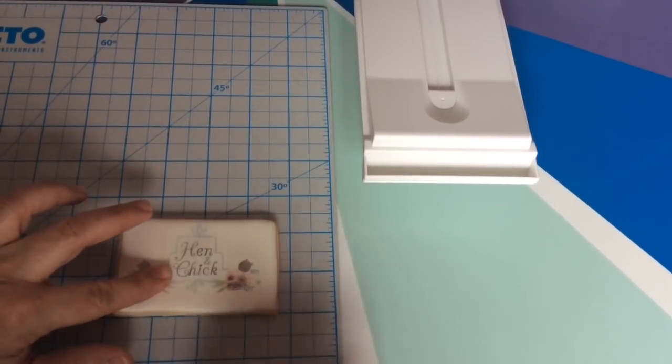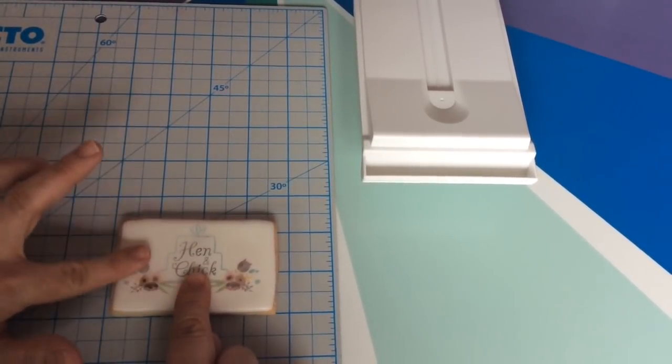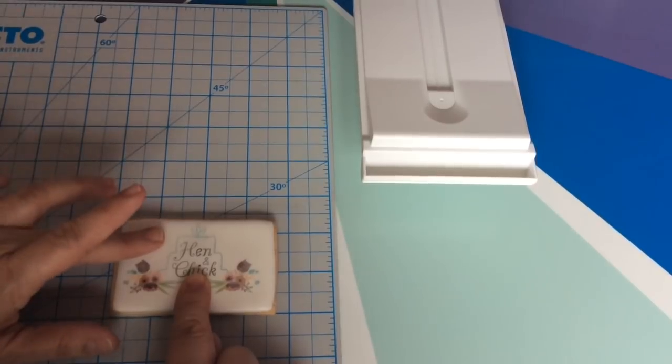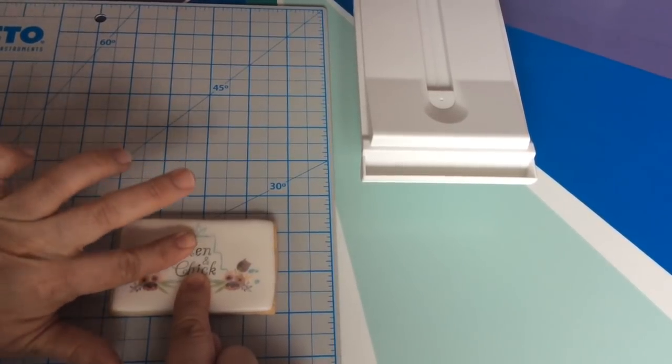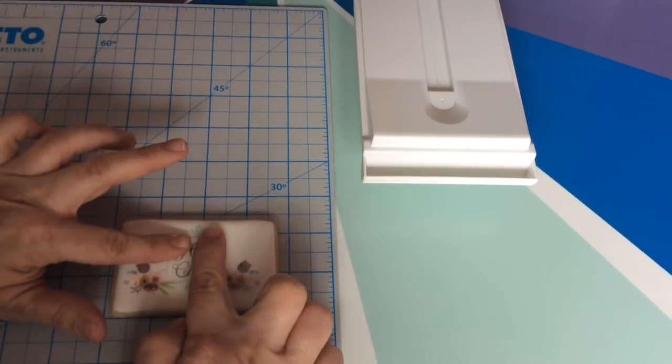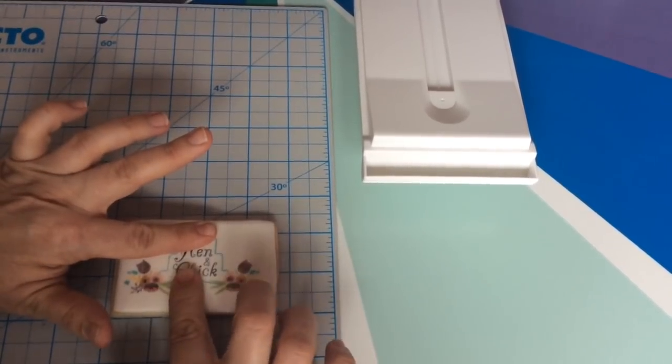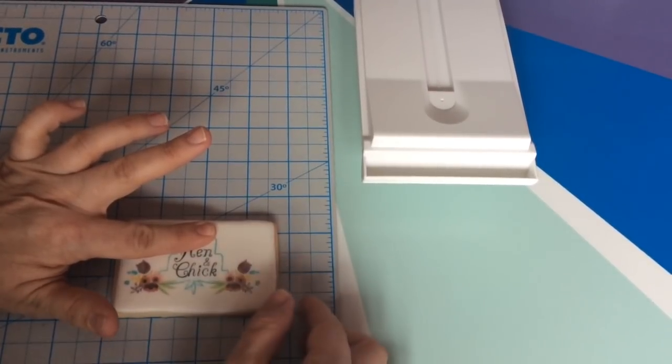Keep holding it by pressing straight down on every part of the image to make sure the entire picture transfers, and then you're going to carefully peel the acetate off. So let's peel the acetate off and check it out.